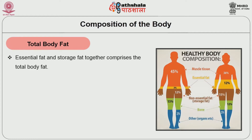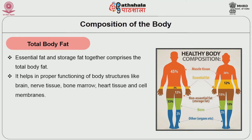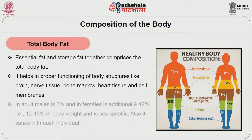Total Body Fat: Essential Fat and Storage Fat together comprise the total body fat. Essential Fat helps in proper functioning of body structures like brain, nerve tissue, bone marrow, heart tissue and cell membranes. The Essential Fat in adult males is 3% and in females is an additional 9 to 12%, i.e., 12–15% of body weight, and is sex specific. The Essential Fat also varies with each individual.